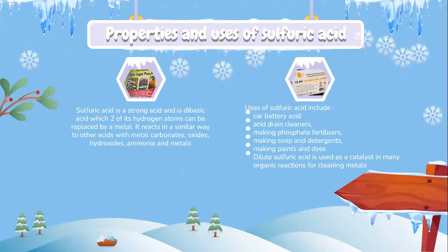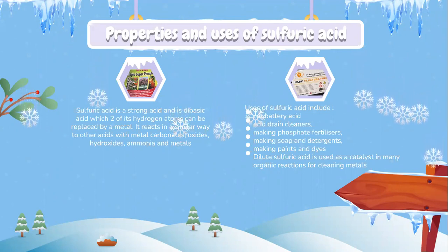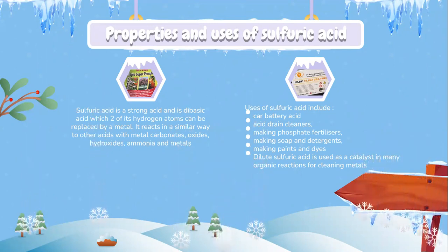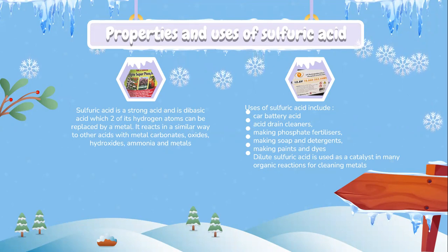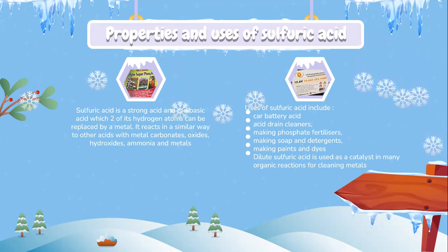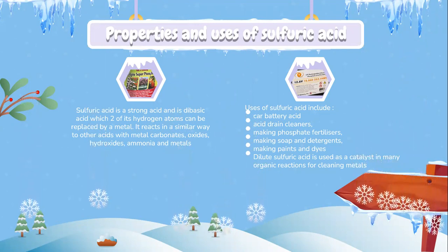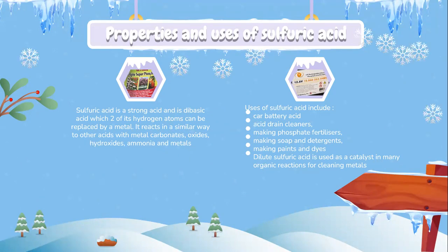Sulfuric acid is a strong acid and is dibasic, meaning two of its hydrogen atoms can be replaced by a metal. It reacts in a similar way to other acids with metal carbonates, oxides, hydroxides, ammonia, and metals. Uses of sulfuric acid include as battery acid, acid drain cleaner, making phosphate fertilizer, making soap and detergent, making paint and dyes, as a catalyst in many organic reactions, and for cleaning metals.